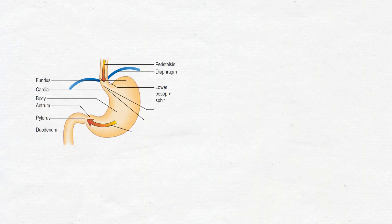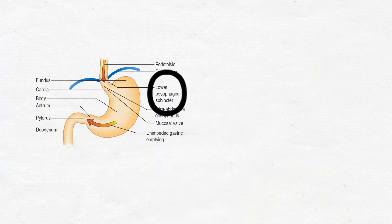Between swallows, the muscles of the esophagus are relaxed except for those of the sphincters. The lower esophageal sphincter remains closed due to the unique property of the muscle and relaxes when swallowing is initiated.